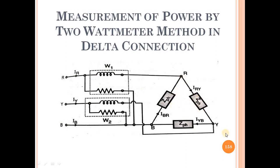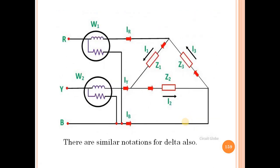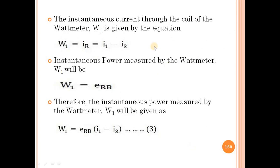Here R, Y, B are the phases. The current i_RY flows in the RY branch, i_YB flows in the YB branch, and i_BR flows in the BR branch. Z_ph is the impedance. In the diagram, currents flow through impedances Z1, Z2, Z3, with i1 through Z1, i2 through Z2, and i3 through Z3. Similar notations apply for delta as for star.